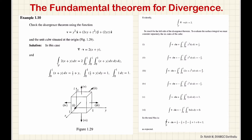We have a cube with side length 1, with one corner at the origin at coordinates (0,0,0). We have to calculate both the left-hand side and the right-hand side of the divergence theorem to verify it.